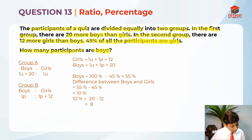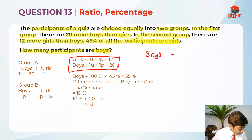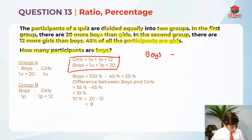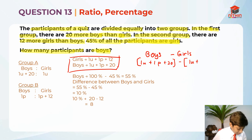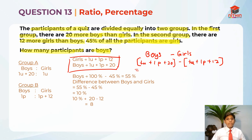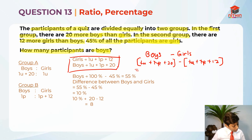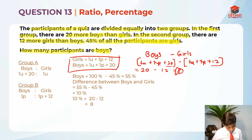We know that the boys are more. So I'm going to take boys minus girls. Boys are 1 unit plus 1 part plus 20, minus girls which is 1 unit plus 1 part plus 12. The 1 unit cancels out — 1 unit minus 1 unit equals 0. The 1 part cancels out — 1 part minus 1 part equals nothing. So that is why we take 20 minus 12, which is 8. This is why 10% equals 8. I hope you understand that.